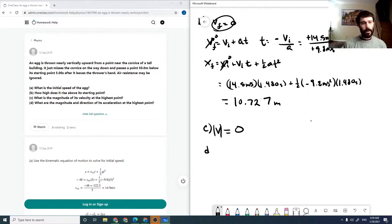And the magnitude and direction of its acceleration. Well, a is minus g. So its magnitude is 9.8 meters per second squared, and its direction is downward.